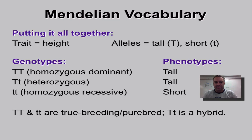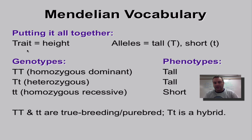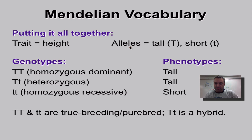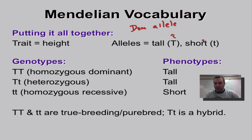Let's put it all together using the pea plant trait of height. Height is a trait. Traits are determined by a gene. In this case, the gene has two alleles — remember, an allele is an alternative form of a gene. There is a tall allele, which is the dominant allele, and a short allele, which is the recessive allele.